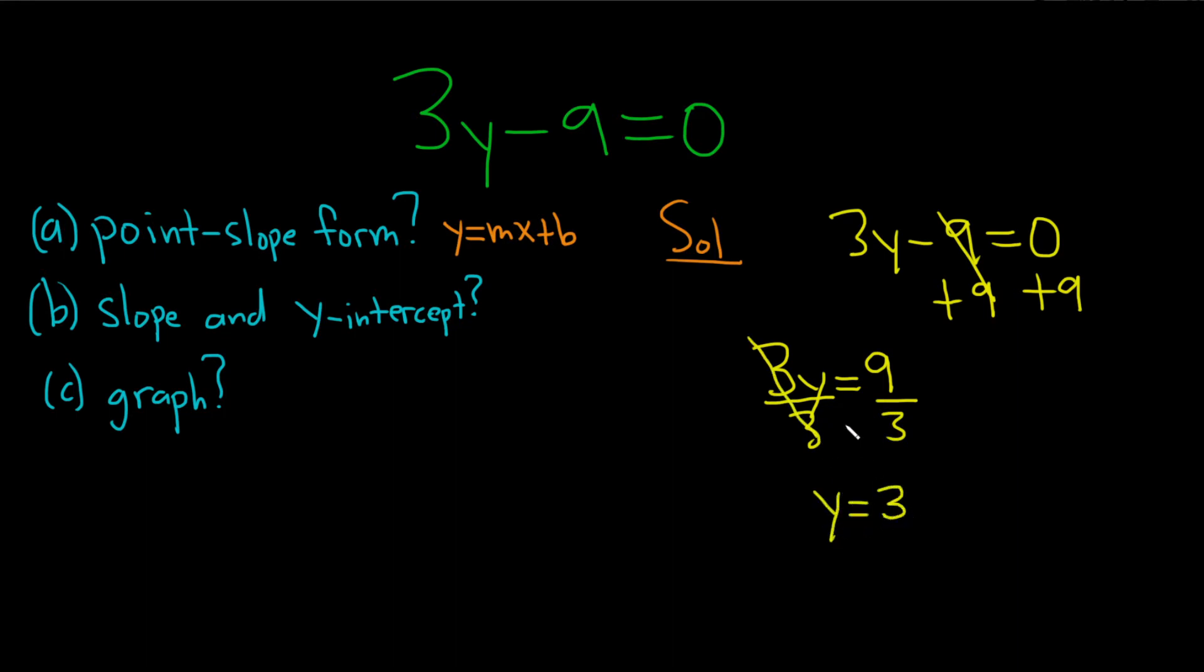Wait a minute. This is not in the form mx plus b. But it is! We can write this as 0x plus 3, right? Because 0x is 0, so you could do that. And so now we've technically written it in the form y equals mx plus b.